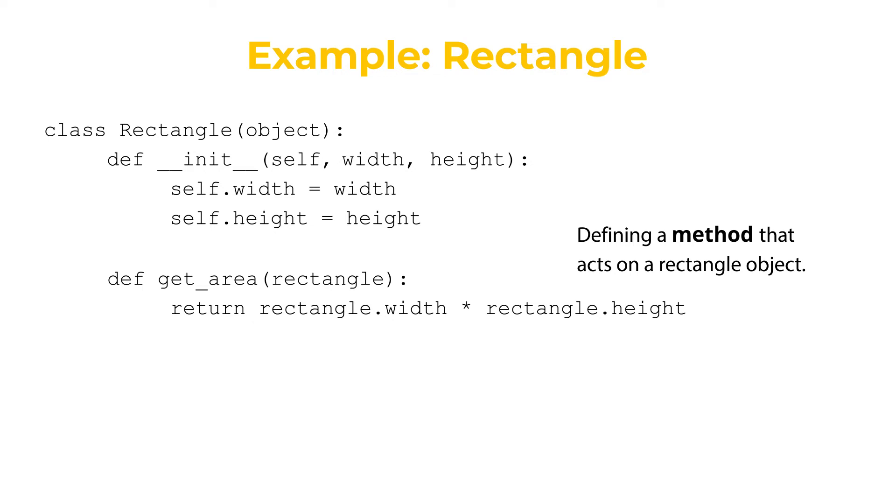But I'll make a small change. This parameter, rectangle, is really a reference to self. It is basically the same self parameter as the one you see in the constructor __init__. And even though you can call the parameter whatever you want, the convention is to always call it self.